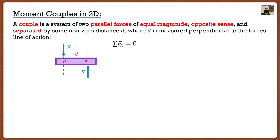With these two forces, we can do a variety of things. The first thing is to take equilibrium. If I were to go with summation of forces in the x direction — they're vertical, so there's going to be no x component. They create no horizontal translation. If I take the summation of forces in the vertical direction, I have a force going downwards of F and a force going upwards of F, so I have F minus F. The summation of forces in the vertical direction, even though there are forces in that direction, is going to be zero. These two forces on our body are not going to make it translate — they're not going to make it go up or down vertically.